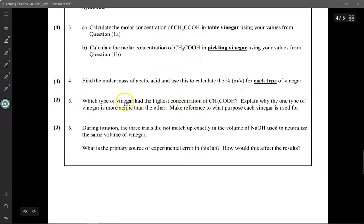Based on your calculations above, which type of vinegar, pickling or table, had the highest concentration of acetic acid? And explain to me why would pickling vinegar have more acetic acid than the other one? What's the purpose? Why did the manufacturer design it that way? Make sure you reference the purpose of each vinegar in your answer.